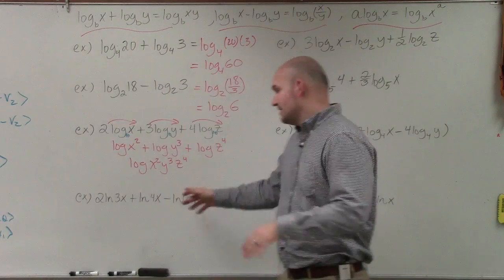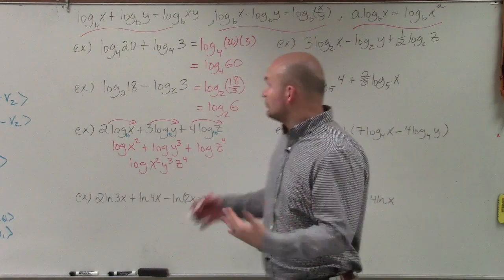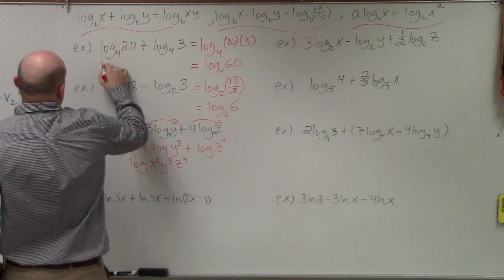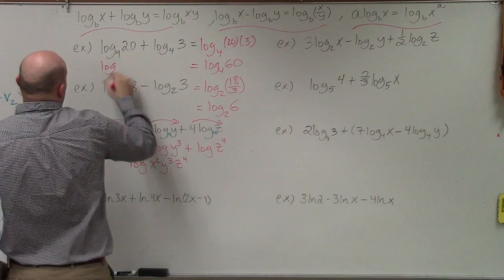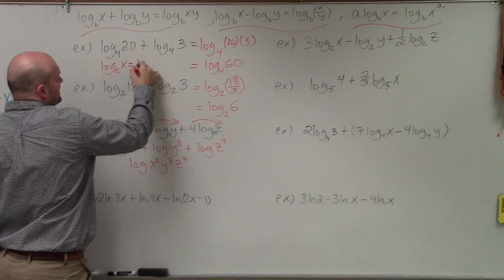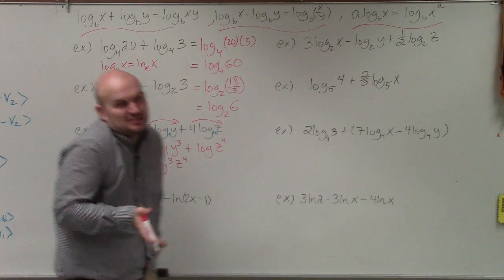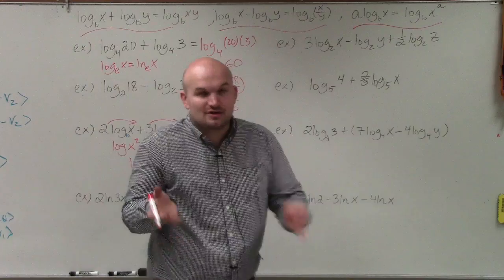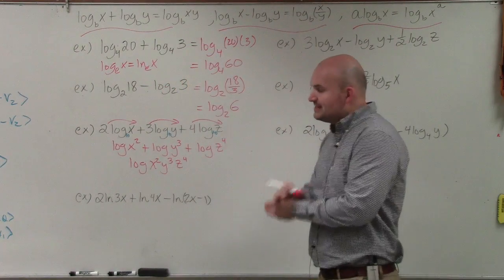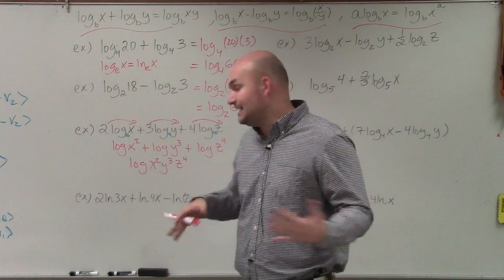In the next example we have natural logarithm, ln. Log base e of x is the same thing as ln of x — it just tells us the base is e. This is going to be the exact same process; nothing's really changing, it's just telling us our base is now going to be e, and we're going to apply the same operations.